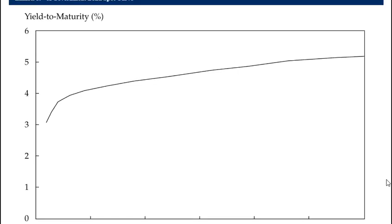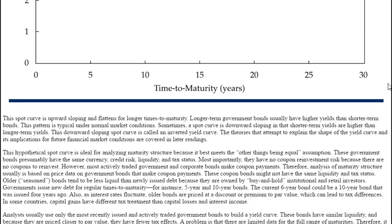The yield to maturity starts around 3% going up to close to 5% over 30 years. This spot curve is upward sloping and flattens for longer terms to maturity. Longer-term government bonds usually have higher yields than shorter-term bonds — this pattern is typical under normal market conditions. Sometimes a spot curve is downward sloping, where shorter-term yields are higher than longer-term yields. This downward-sloping spot curve is called an inverted yield curve. The theories that attempt to explain the shape of the yield curve are covered in later readings.